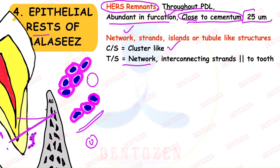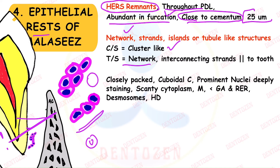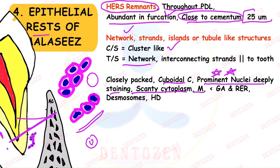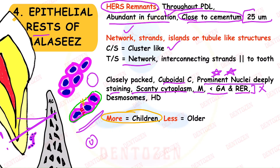Rests of Malassez are differentiated from fibroblasts by being closely packed cuboidal cells joined together with prominent, dark-staining nuclei and scanty cytoplasm. They have mitochondria but less Golgi apparatus and rough endoplasmic reticulum — meaning they are not synthetic cells. They have desmosomal junctions between cells and attach to their basal lamina via hemidesmosomes.